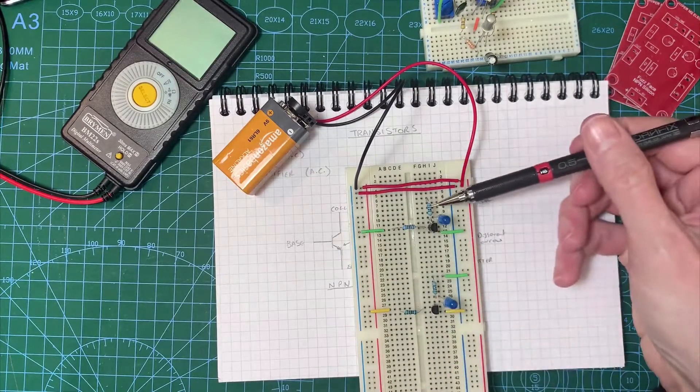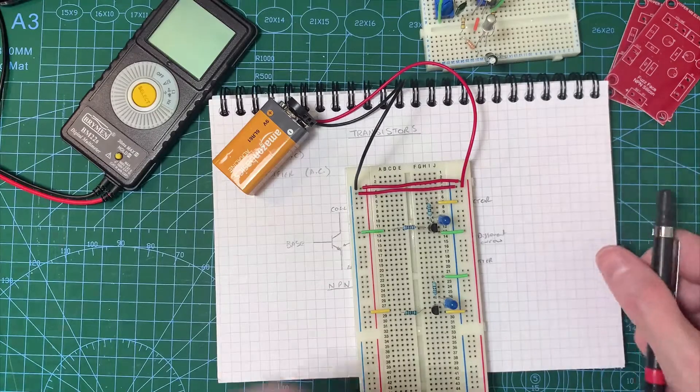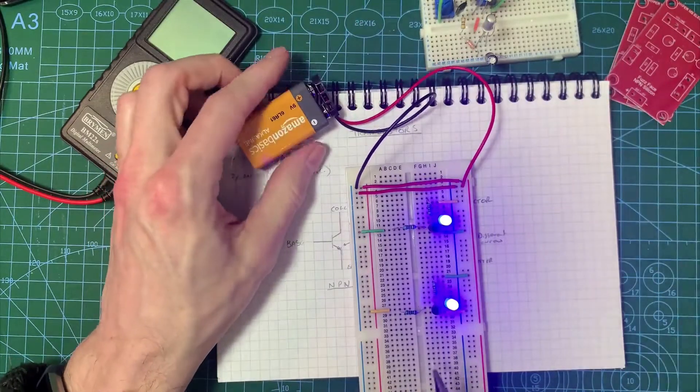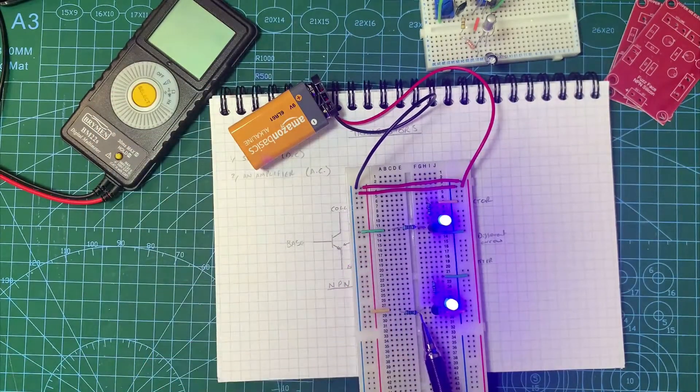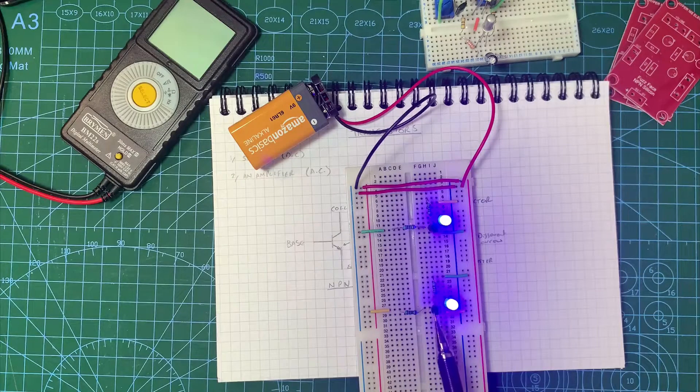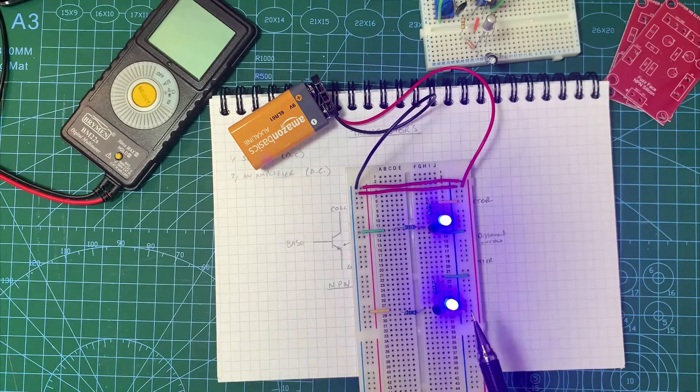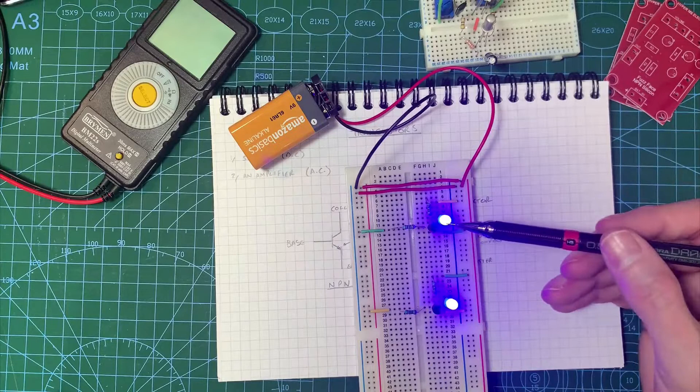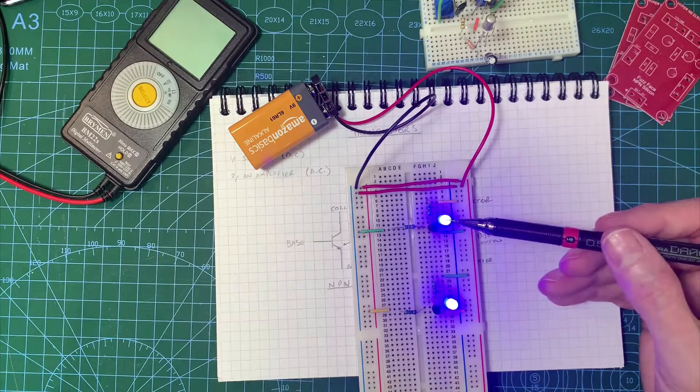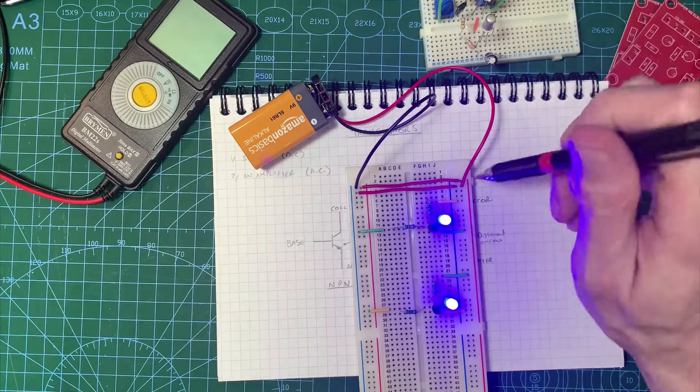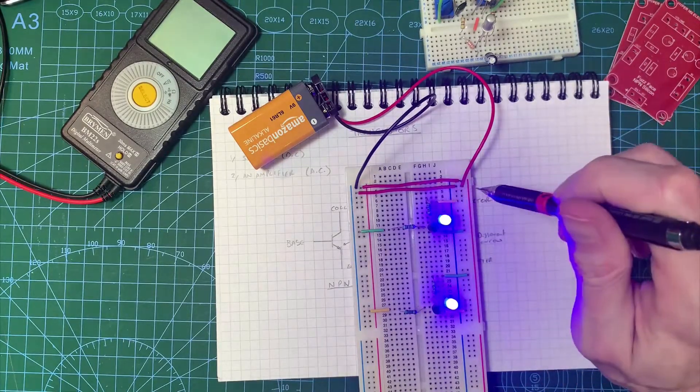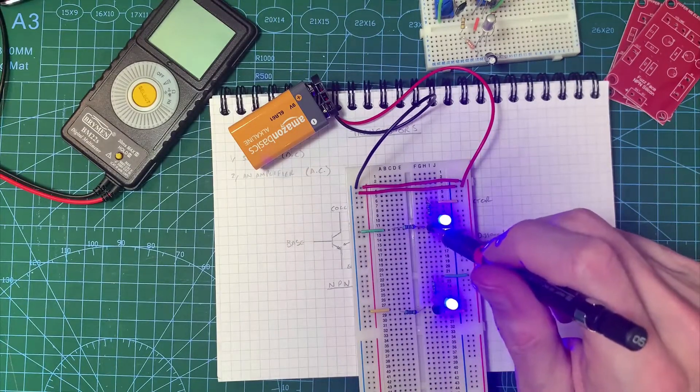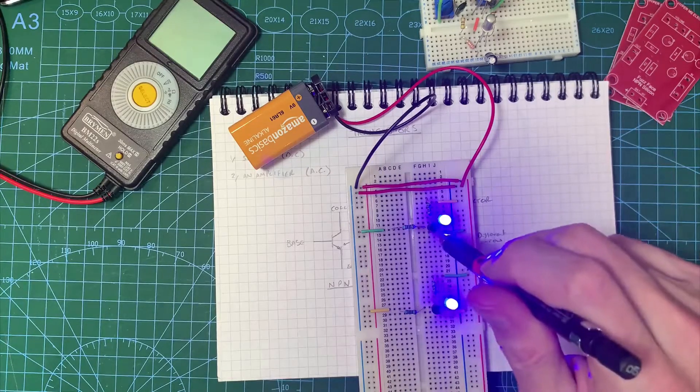And if I apply power to them, what's happening is a small current, well actually fairly large current, is going into the base of this transistor. It's turning it on, and it's turning it fully on. It's in saturation mode, and that is indeed turning the LED on. But if we think about it here, what we're actually getting is a flow that's going this way through this one and this way through this one. And that's because this is a PNP and this is an NPN. So slightly different in operation.